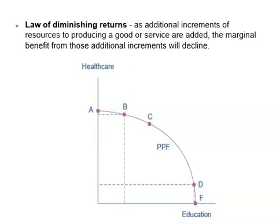If there are not many doctors and hospitals available, a little investment in the healthcare system can improve it significantly. But as more and more good doctors and hospitals become available everywhere, adding more resources to healthcare would not improve it much. This is what's called the law of diminishing returns: as additional increments of resources to producing a good or service are added, the marginal benefit from those additional increments will decline.